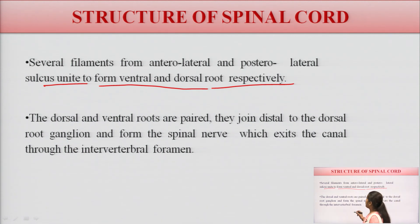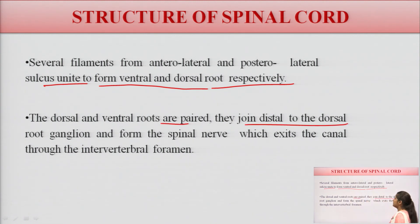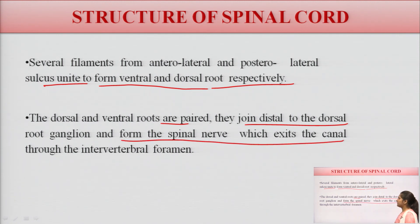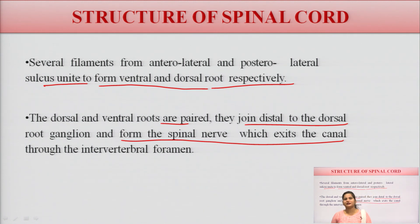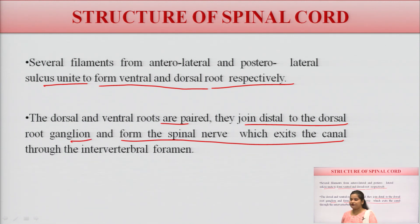The dorsal root and the ventral roots are paired, and they join distally at the dorsal root ganglia to form spinal nerves, which exit the canal through the intervertebral foramina.